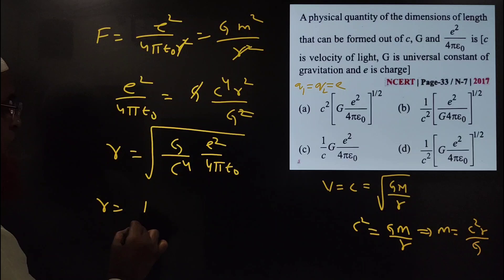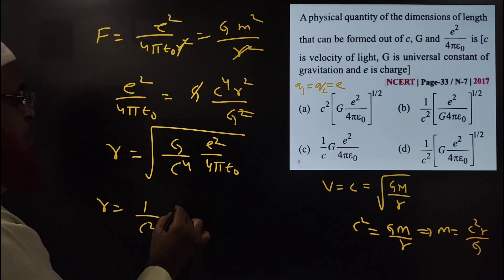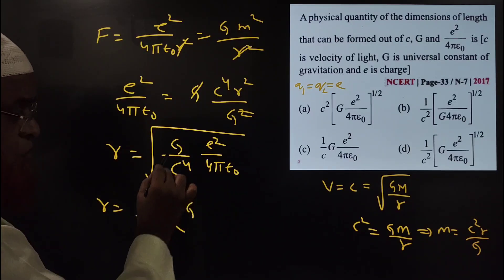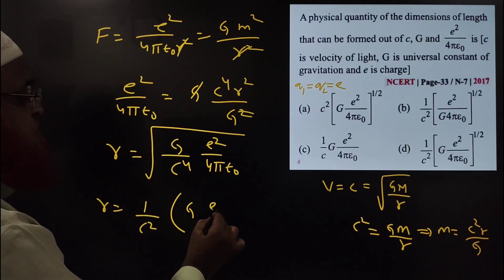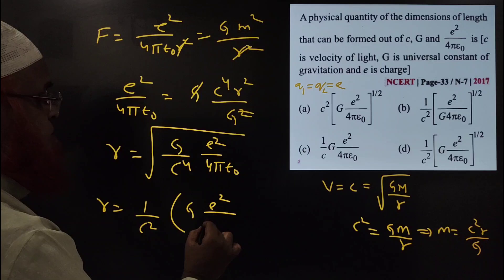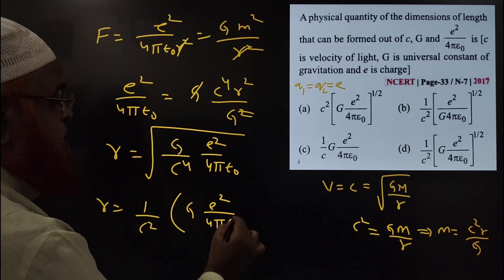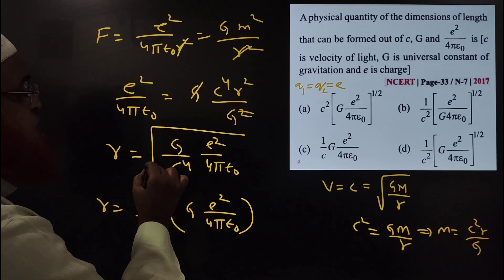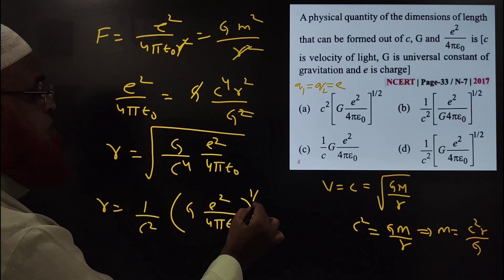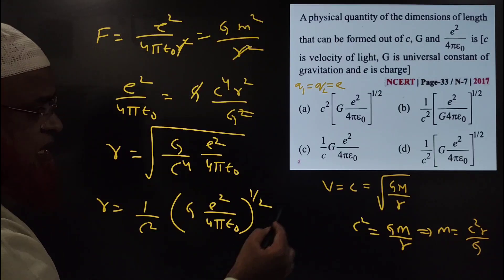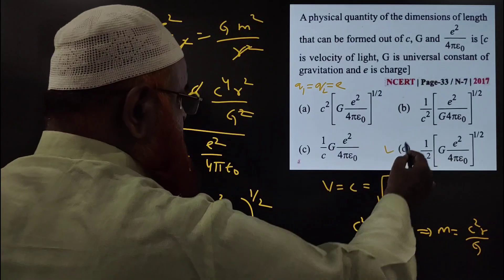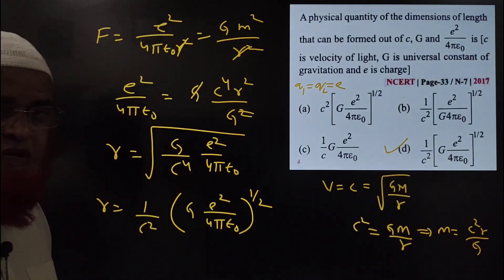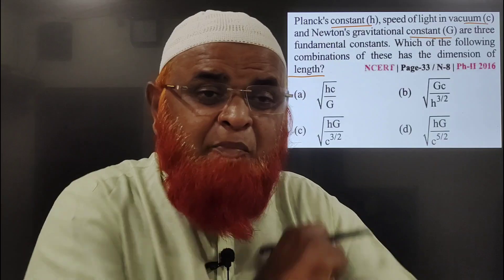Taking the square root, R equals 1 by C² times square root of G·(E² by 4π epsilon naught). So the answer simplifies to root of G·(E² by 4π epsilon naught) divided by C². The correct option is D. Hope you have enjoyed this problem.